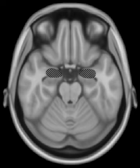It is also increasingly concerned with the brain basis for musical aesthetics and musical emotion. Scientists working in this field may have training in cognitive neuroscience, neurology, neuroanatomy, psychology, music theory, computer science, and other relevant fields. The cognitive neuroscience of music represents a significant branch of music psychology, distinguished from related fields such as cognitive musicology in its reliance on direct observations of the brain using techniques such as fMRI, transcranial magnetic stimulation, magnetoencephalography, EEG, and positron emission tomography.